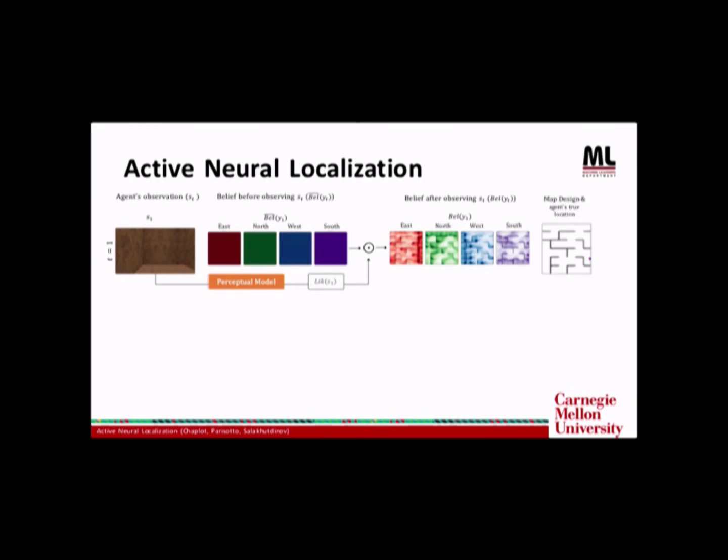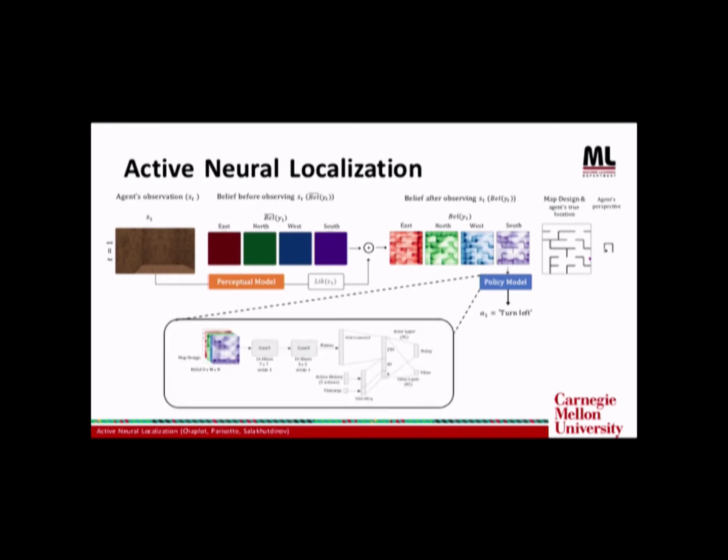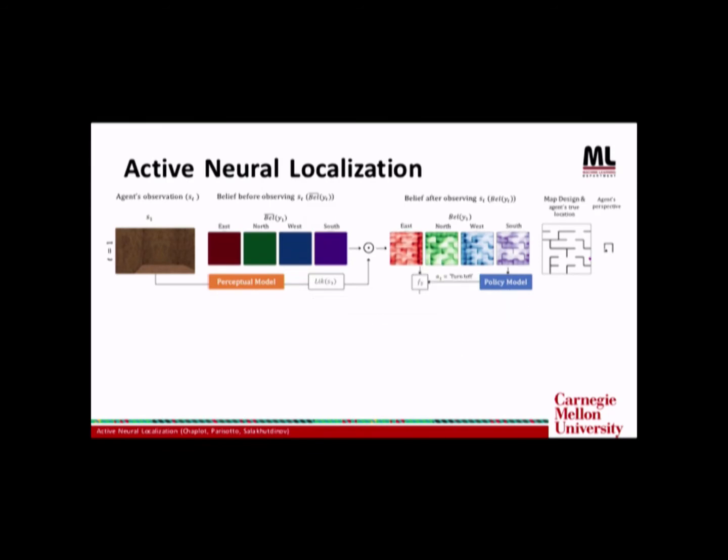So for reference, the true location of the agent and its perspective is shown on the right. The agent has just seen three walls currently. And the likelihood reflects that. All the positions with that perspective have non-zero probability. The belief and the map design are passed through the policy model, which predicts the action. The policy model is also a convolutional neural network. After taking the action, the belief is transformed using the transition function, according to the action taken by the agent. This is again analogous to the first equation we saw earlier in Bayesian filtering.